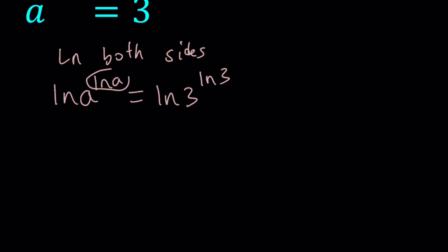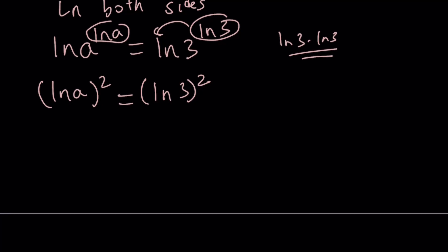Let's go ahead and move these to the front. So, it's going to give us ln a times ln a, which is ln a squared. And the right-hand side is going to be ln 3 squared. Because when I move this, it's just going to be ln 3 times ln 3. And it's the same quantity multiplied by itself.